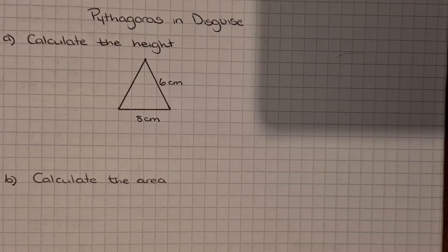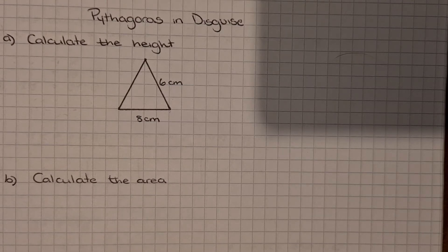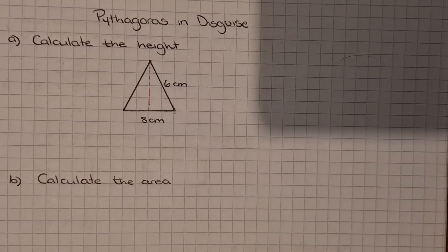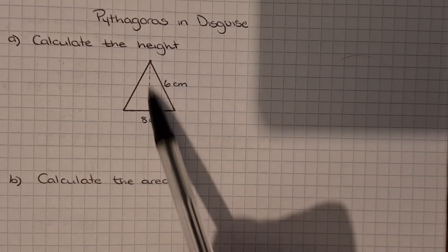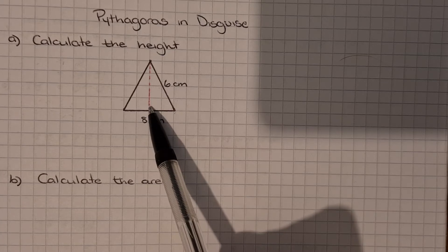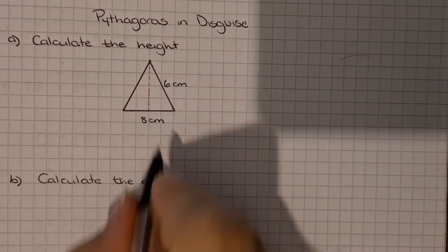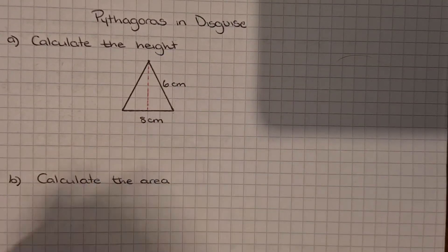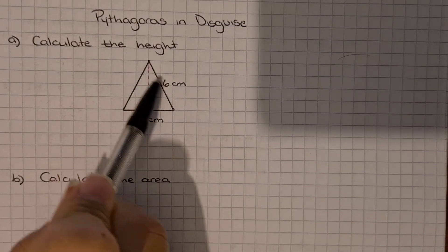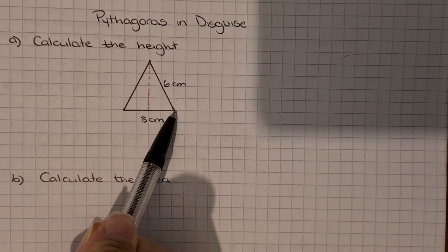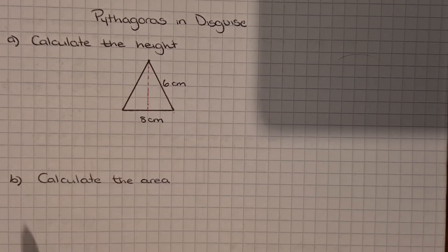Pythagoras only works on right angle triangles, and this triangle in the question is not a right angle triangle. We've been asked to calculate the height, so I'm going to draw the height onto the triangle. This red line is the height. All we know about this triangle is that the base is 8 and the sloped side is 6, and we need to calculate the height.